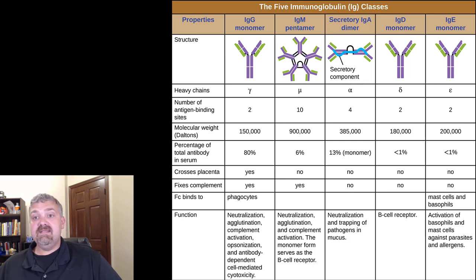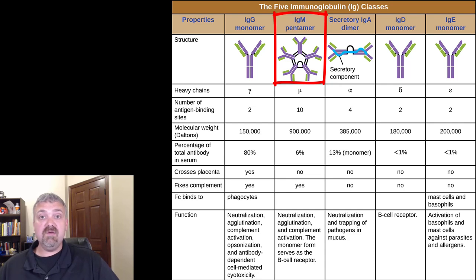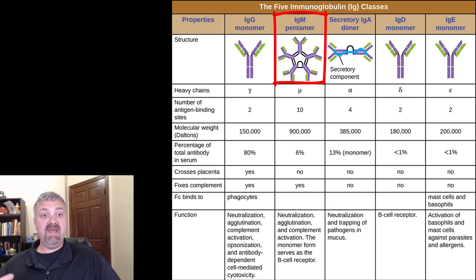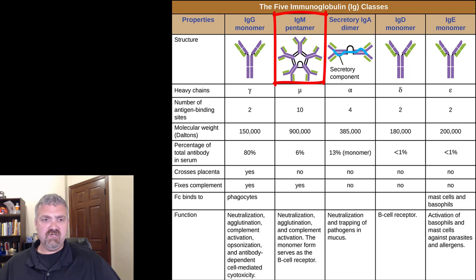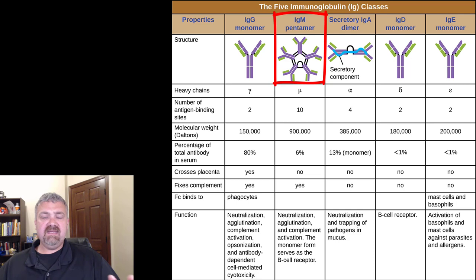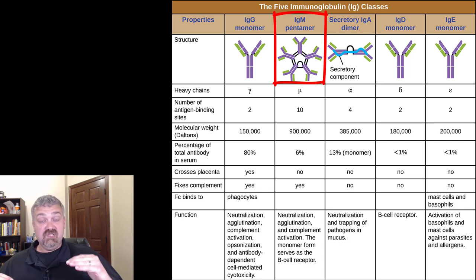Next in GAMED is IgM. As you can see, IgMs are a pentamer — they call them a starburst. Five individual subunits make up one of them, so structurally they're going to be the largest by far. The key thing about them is they're the first to show up whenever there's a new antigen. But they're not super effective — they basically hold back invaders long enough for the IgGs to show up and do the work. That's why as IgG concentration goes up, IgM concentration goes down.